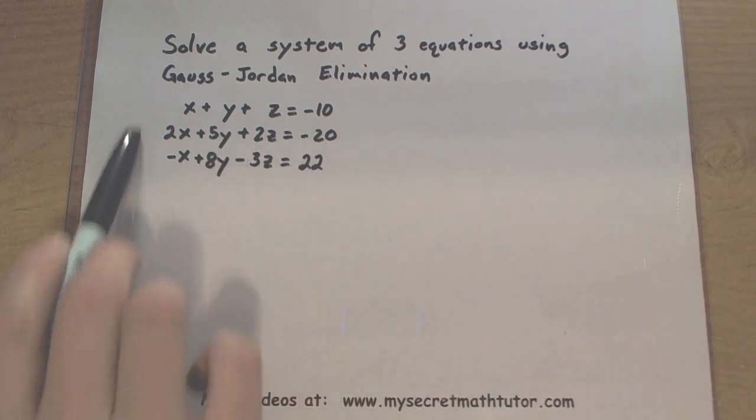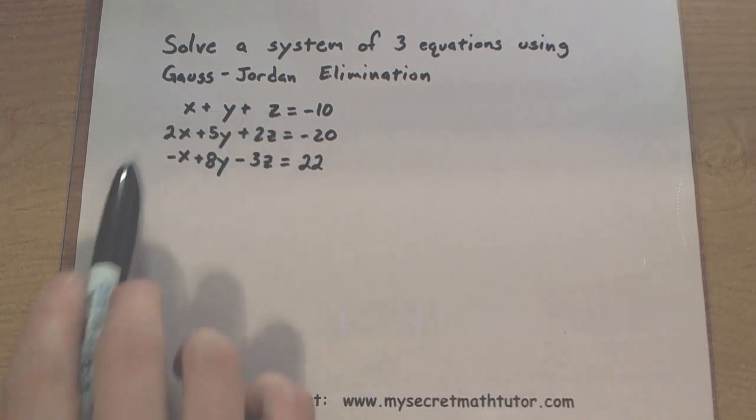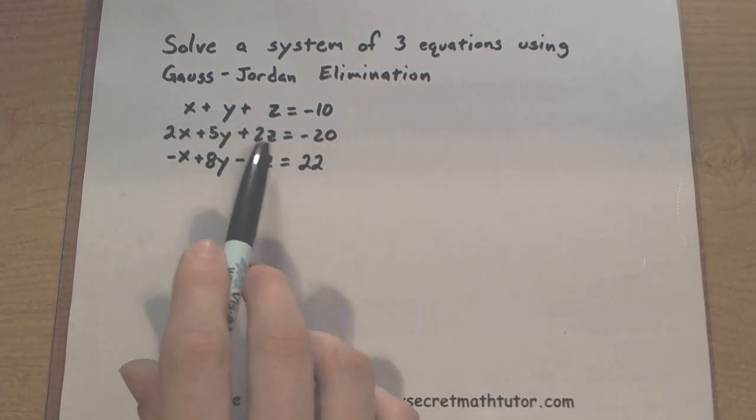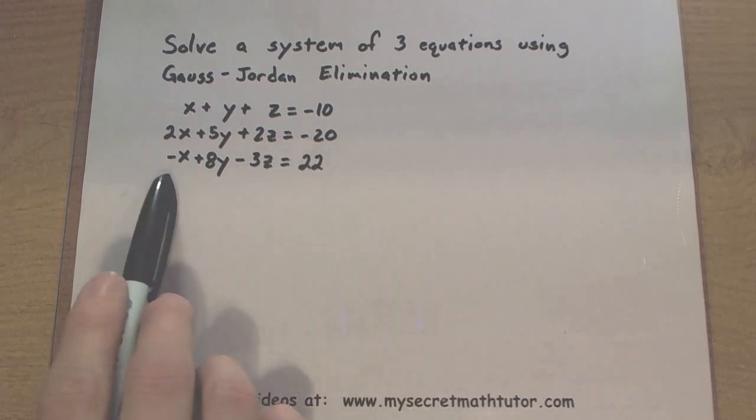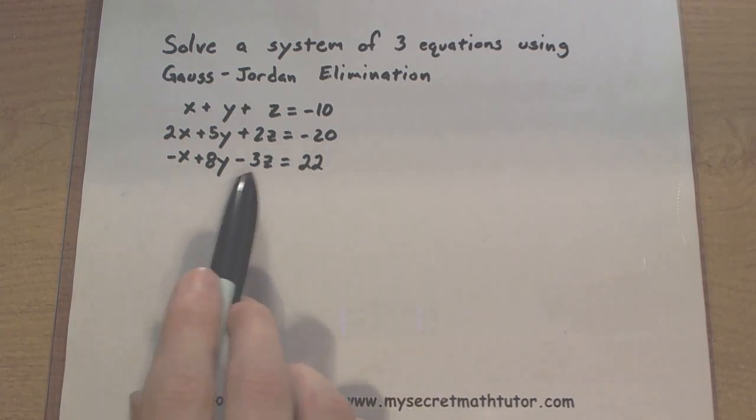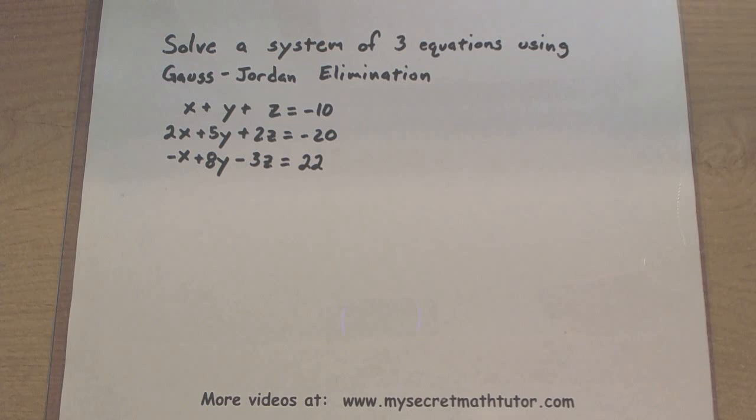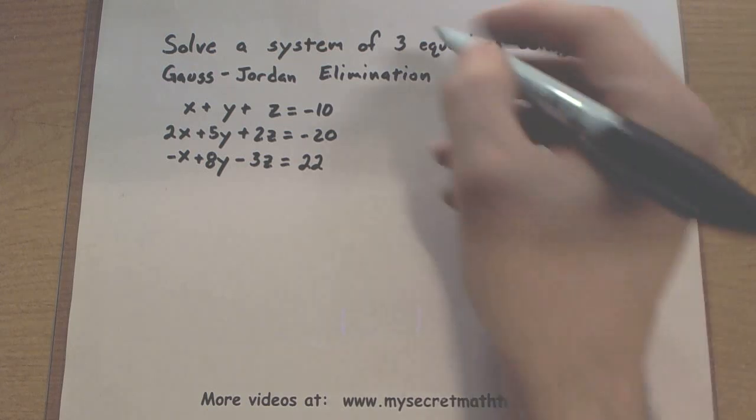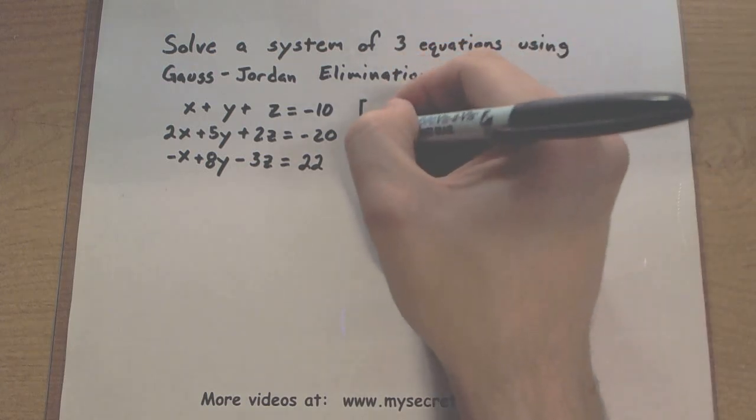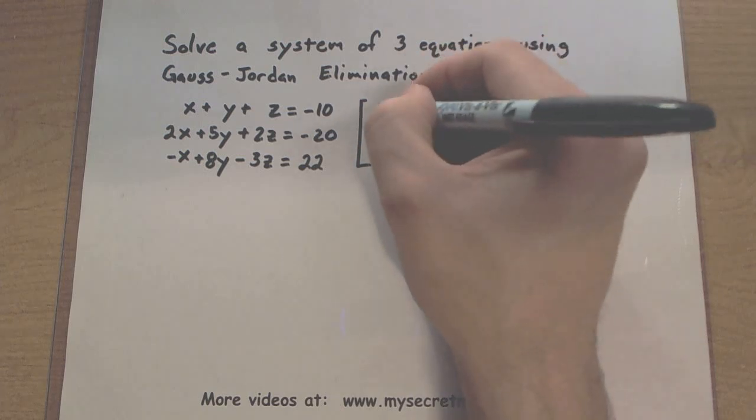So here we have three linear equations: x plus y plus z equals negative 10, 2x plus 5y plus 2z equals negative 20, and negative x plus 8y minus 3z equals 22. So in order to see what I'm doing, I'm first going to take all of this and put it into a matrix.